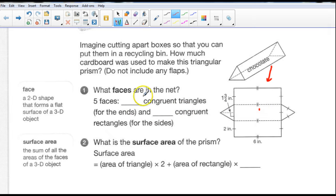So we've got how many congruent triangles? Well, it looks like we have 2 congruent triangles for the ends and 3 congruent rectangles for the sides. We know what the word congruent means from the previous. It means that they're the same. Let's just get some terminology out of the way first. We have a face. The face is a 2D shape that forms a flat surface of a 3D object. And then surface area is the sum of all the areas of the faces of a 3D object.